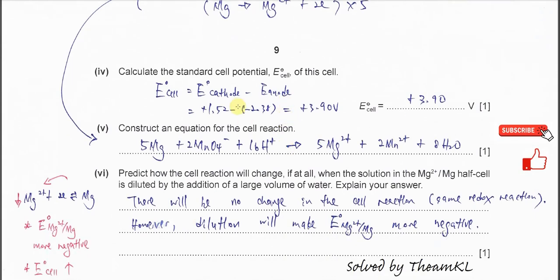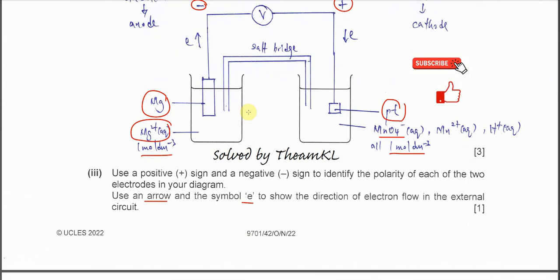Part 4: Calculate the standard cell potential. To calculate E°cell, use E°cathode minus E°anode. The permanganate electrode gains electrons, so it undergoes reduction — it is the cathode. The magnesium electrode loses electrons, so it undergoes oxidation — it is the anode. Therefore: E°cell = 1.52 − (−2.38) = 3.90 V. This is the E°cell for the overall cell.